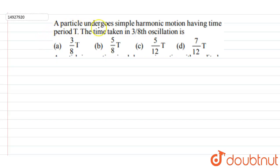So the question is that we have a particle undergoing simple harmonic motion having time period T. There is a particle in SHM motion with time period T.